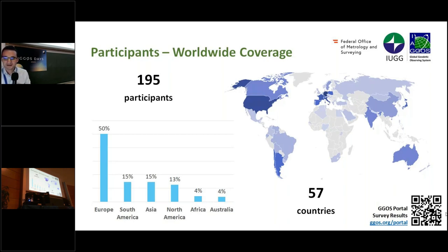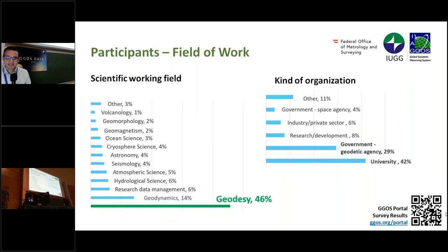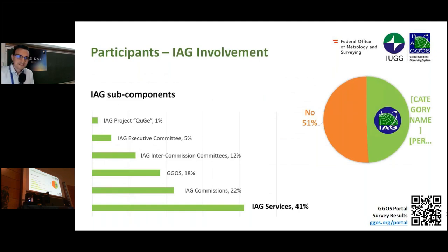It was a real success. We asked the users in which area they are working. The majority is, of course, from Geodesy, but there are also other disciplines listed on the left-hand side. The majority comes from universities and government geodetic agencies. It was also interesting that only half of the people are from the IAG, and the other half have no connections with the IAG, which was a little surprising. You can also see the contributions from the different IAG components — the majority comes from the IAG services.